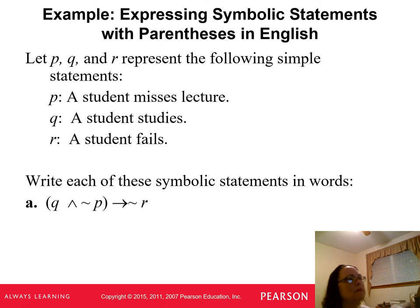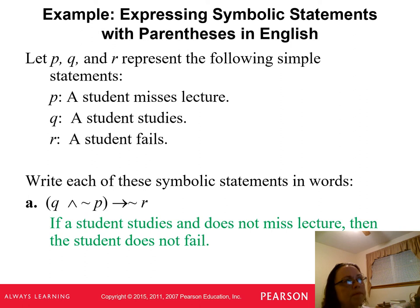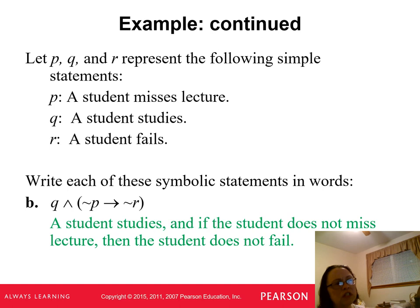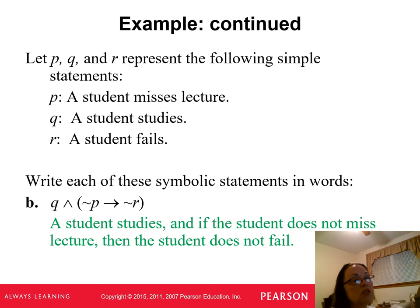Let P, Q, and R represent: a student misses a lecture, a student studies, and a student fails. A compound symbolic statement would be: 'a student studies and a student does not miss a lecture implies a student does not fail.' This is a way of translating between English and logic. There's a whole area of math called logic — I had two semesters of it in my undergraduate studies. We use the manipulation of these symbols to build toward the idea of proof, so it's a very heavy topic in math. If you get deep into math, you will study logic.